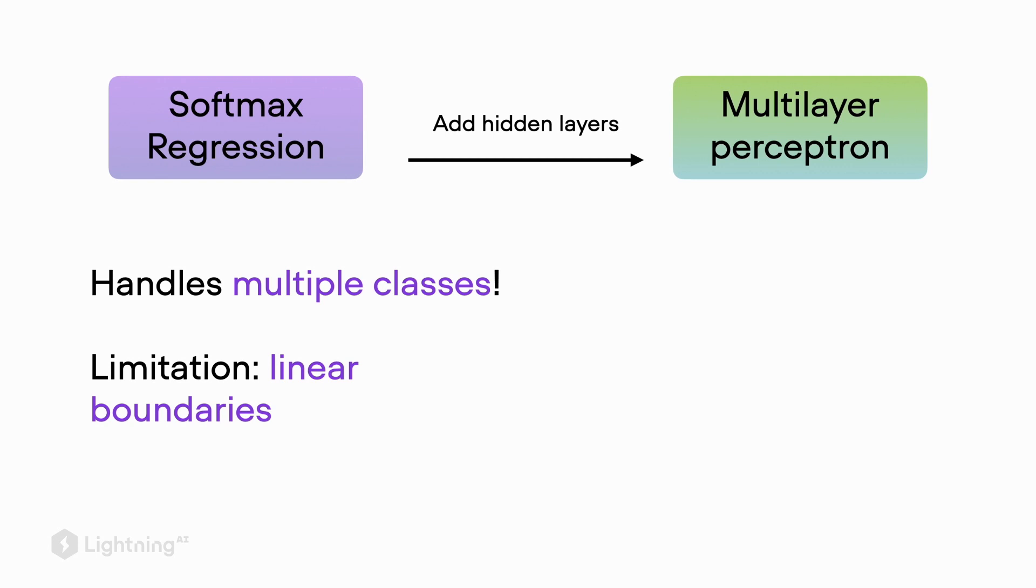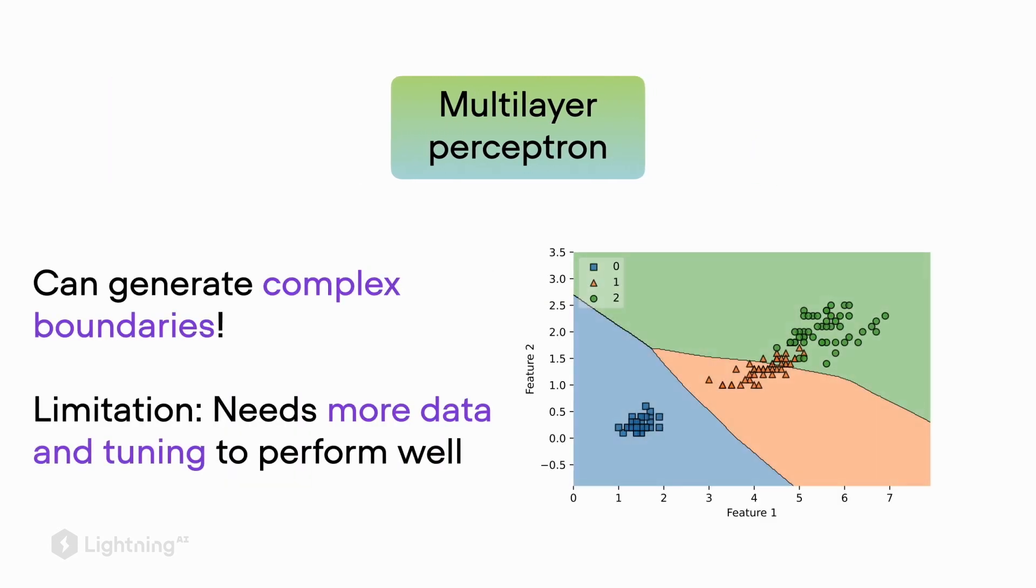The multi-layer perceptron model can do both—it can deal with multiple classes and generate pretty complex decision boundaries. The only caveat is that with these additional capabilities, we need more data to tune it and train it to make it perform well.